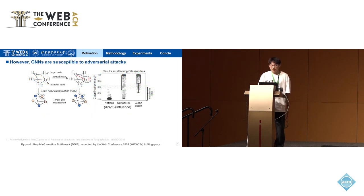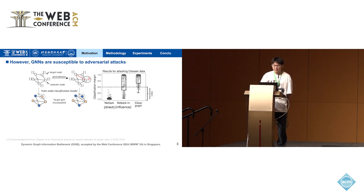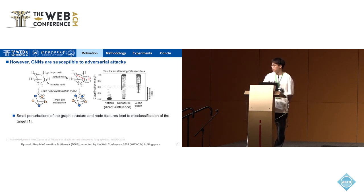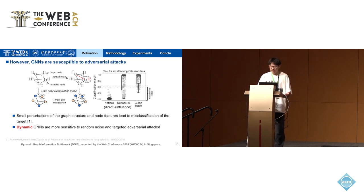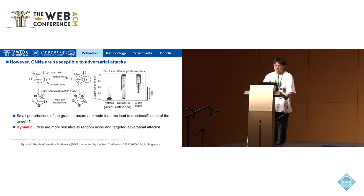More specifically, powerful GNNs are susceptible to potential adversarial attacks. In the node classification task, we only need to perform small perturbations on the features or structures of the attacked nodes to cause misclassifications. Taking this back to the dynamic graph within our scope, as the spatial-temporal correlations in dynamic graphs are more complex and coupled, dynamic GNNs will be more sensitive to random noise and potential targeted adversarial attacks.